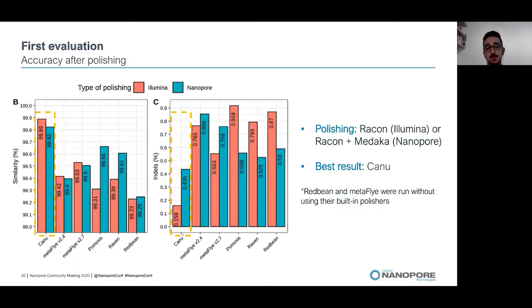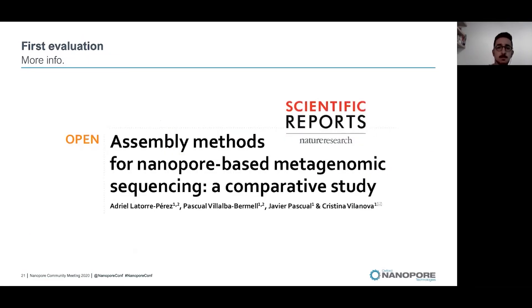In terms of accuracy, we found out that Canu was the most accurate assembly, both in terms of similarity or SNPs ratio and in terms of indels, either when polishing with Illumina reads or with Nanopore reads. Of course, if you want to know better about the results we obtained, I would recommend you to read our recently published paper.